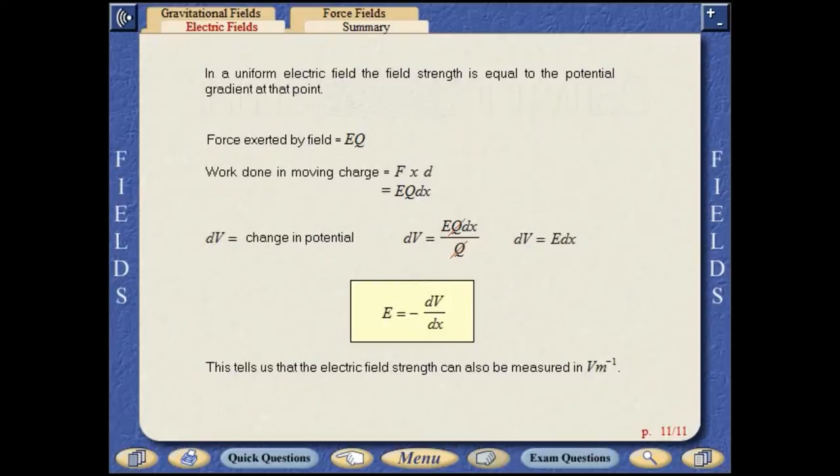In a uniform electric field, the field strength is equal to the potential gradient at that point. This tells us that the electric field strength can also be measured in volts per meter.